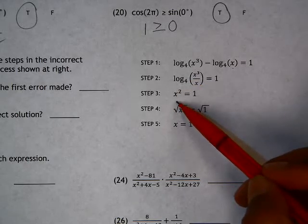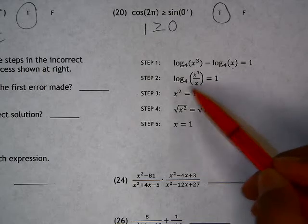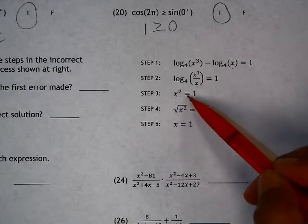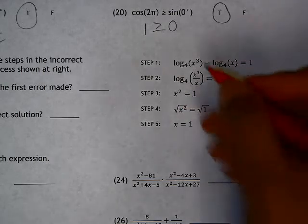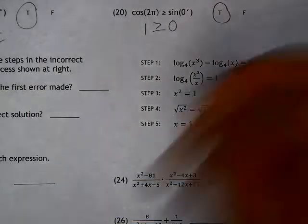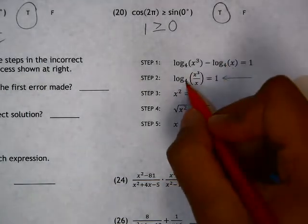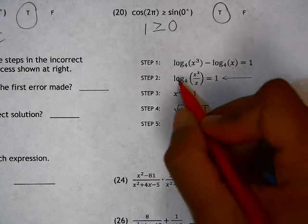And in step 3, here x cubed divided by x is x squared, but it is not equal to 1. We need to use the property to change this to an exponential instead of a log.